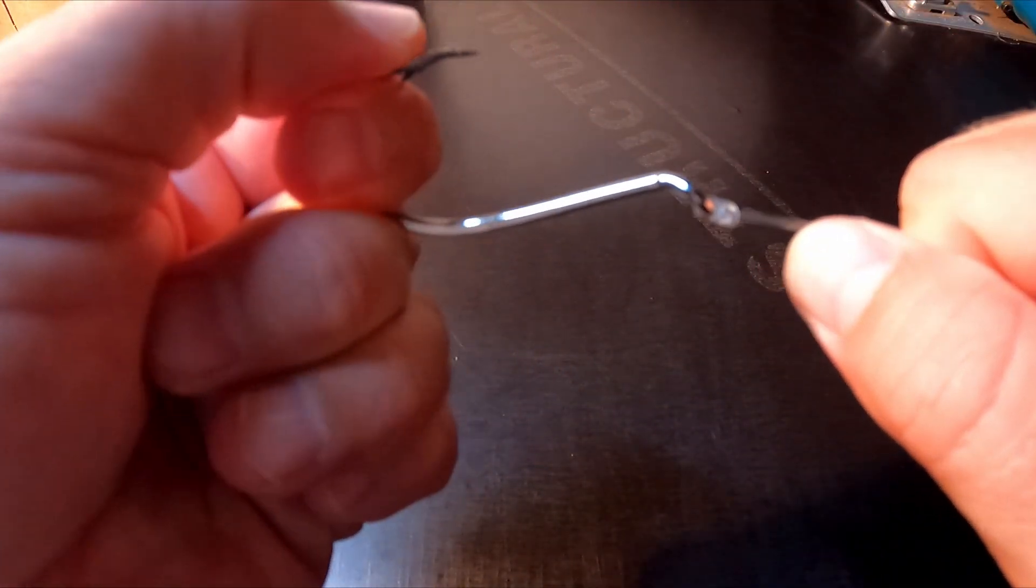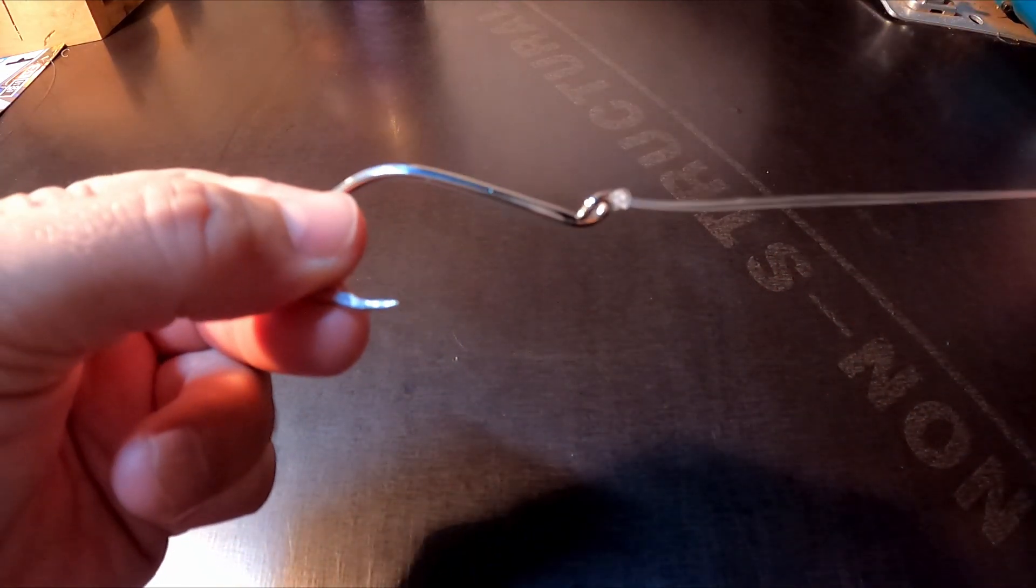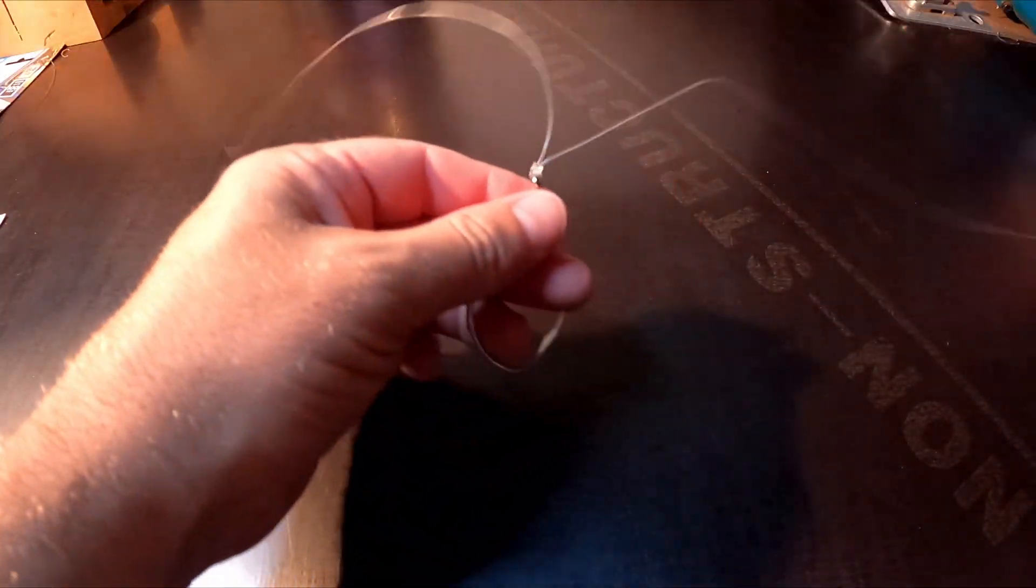And make sure you lubricate your knots as well. There you have it, your Palomar knot—super quick, super simple. Now you can just have that as a drop shot for a fly or soft plastic, or you can trim it in most cases and have it at the end of the line.